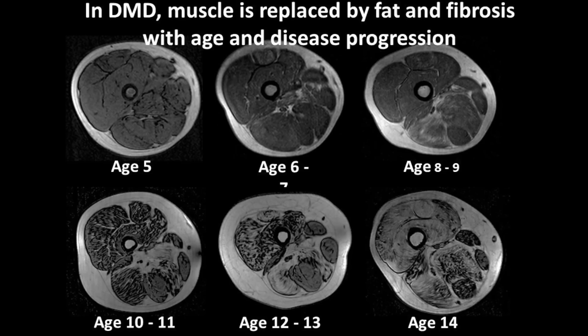That's shown very nicely in these cross-sectional MR images — T1-weighted magnetic resonance images from boys of different ages with Duchenne muscular dystrophy. As you can appreciate, looking at this boy who's age five, there's very little of the white matter that you see in the older boys, especially in this 14-year-old boy. The muscles have very little fibrosis and fat at age five, but as the boys age, the muscle itself is gradually replaced by fat.